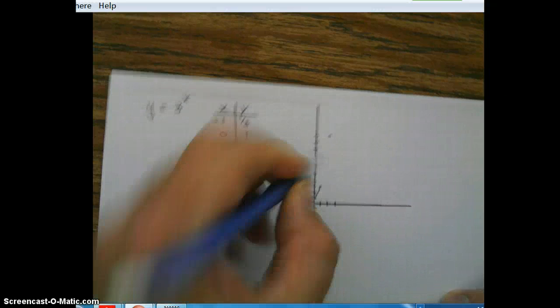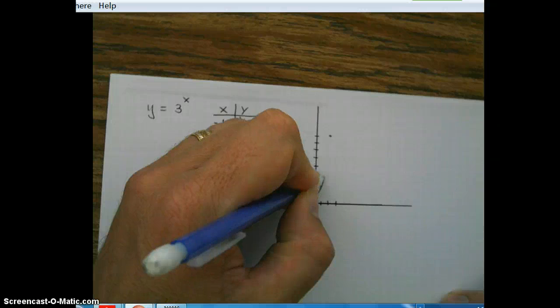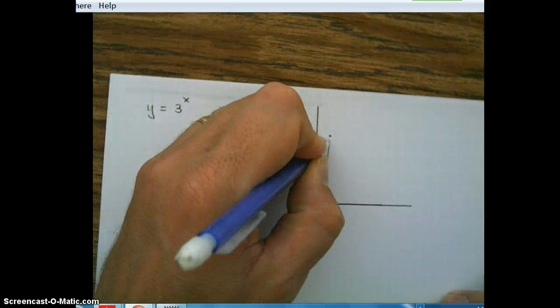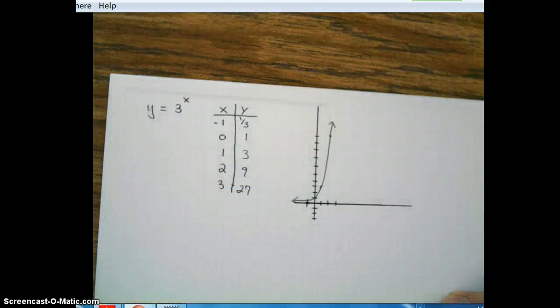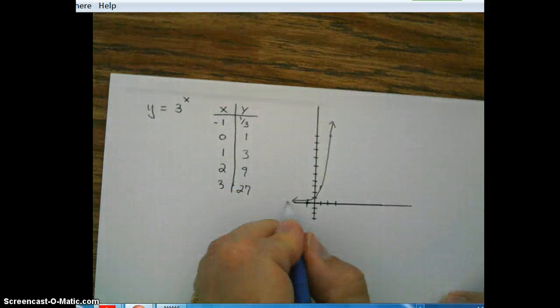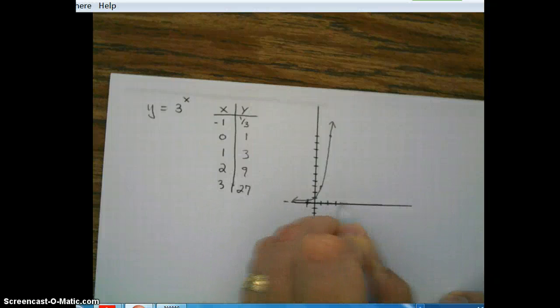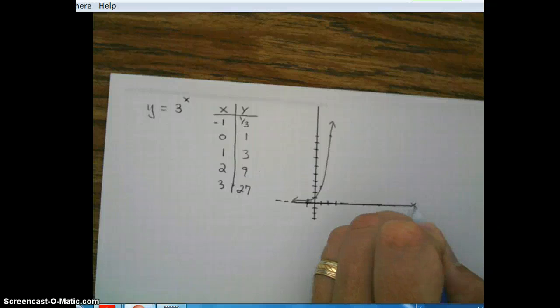So drawing our exponential function, just like that. Don't forget, we have an asymptote right here along the x-axis. x equals 0.